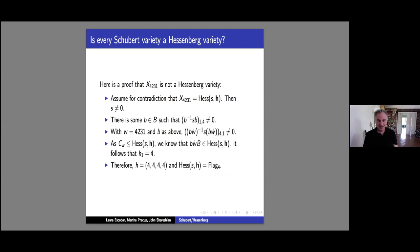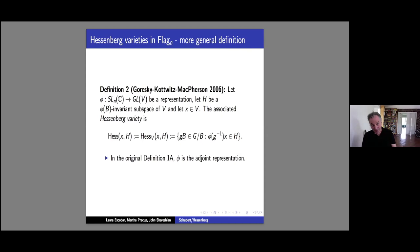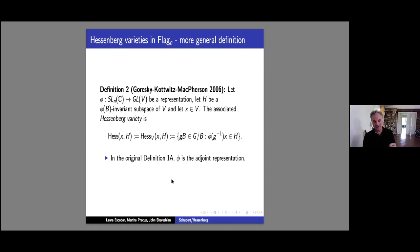There is a much more general definition of a Hessenberg variety, given by Goresky, Kotwitz, and McPherson. You take any representation of SL_N acting on some vector space V, and choose a B-invariant subspace H of V and a vector X in V. The Hessenberg variety consists of all cosets G·B such that G⁻¹ puts the chosen vector X into the Hessenberg space H. The original definition arises when the representation is the adjoint representation. The key point is that this chosen Hessenberg space must be B-invariant for the variety to be well-defined.